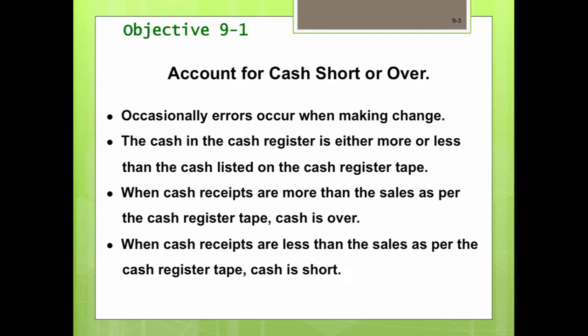When cash receipts are processed, we occasionally have errors when exchanging cash in a business. It may be a transaction entry error, or an employee giving out the wrong amount of cash. So the cash in the cash register is either more or less than the cash listed on the register tape. When cash receipts are more than the sales, we call that an overage, or cash is over. When cash receipts are less than the sales, we call that a shortage, or cash is short. These errors sometimes occur when employees are making change.